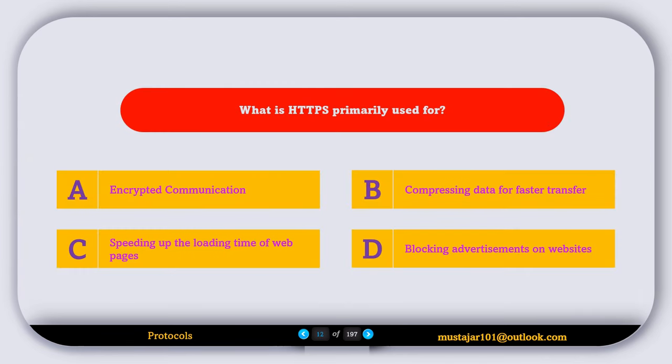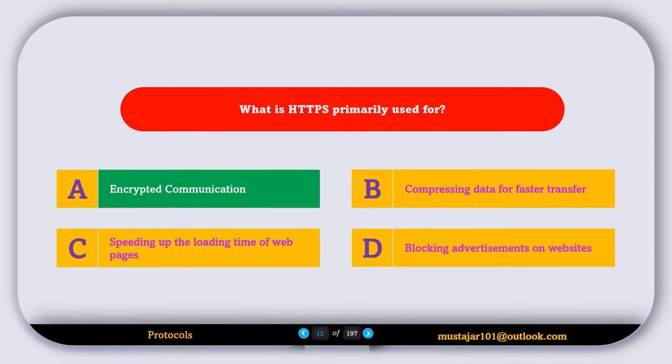What is HTTPS primarily used for? Option A, encrypted communication. Option B, compressing data for faster transfer. Option C, speeding up the loading time for web pages. Option D, blocking advertisements on websites. The correct answer is Option A — encrypted communication.